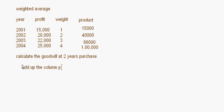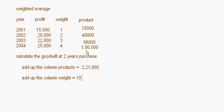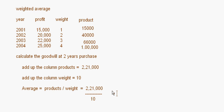Now add up the column of products: 15,000 + 40,000 + 66,000 + 1,00,000 = 2,21,000. Then add up the weights: 1 + 2 + 3 + 4 = 10. The weighted average is calculated as total products divided by total weights: 2,21,000 ÷ 10 = 22,100.